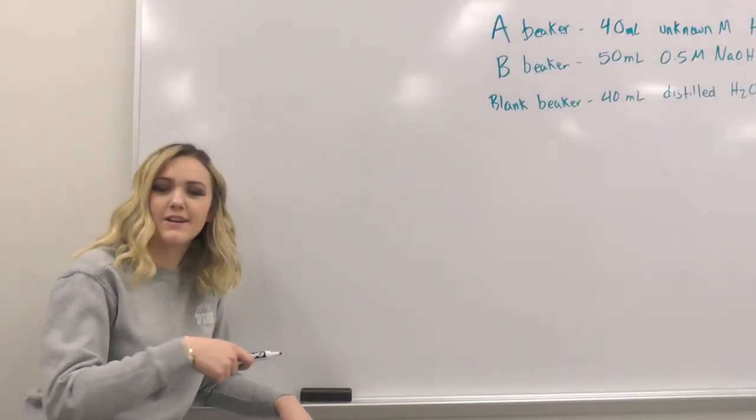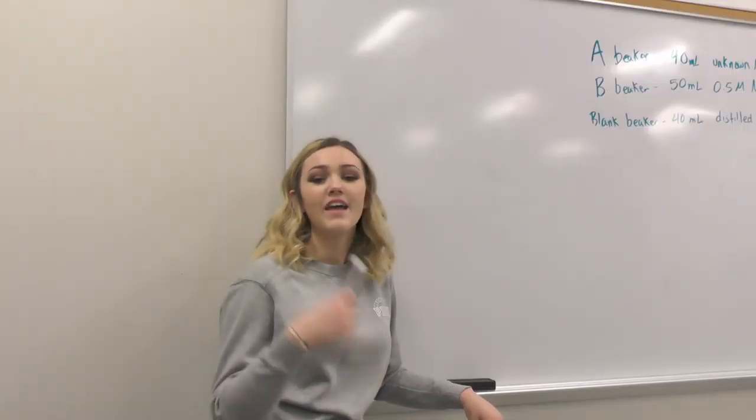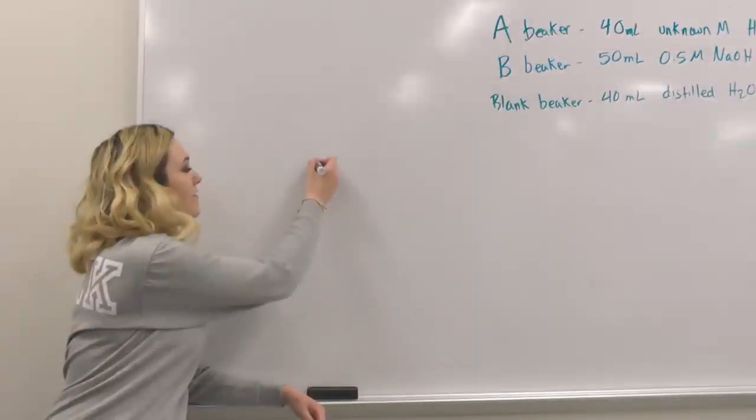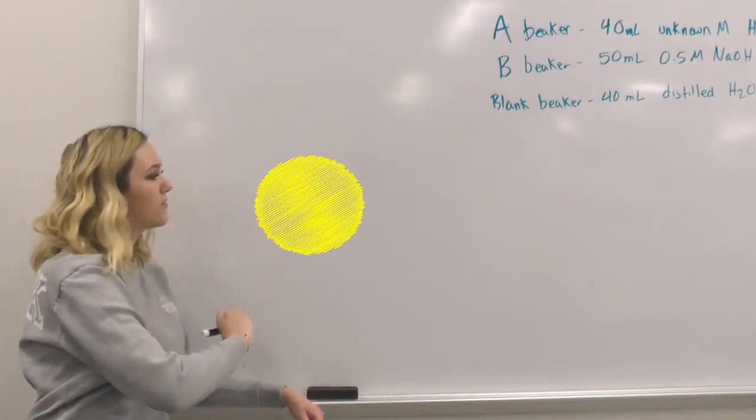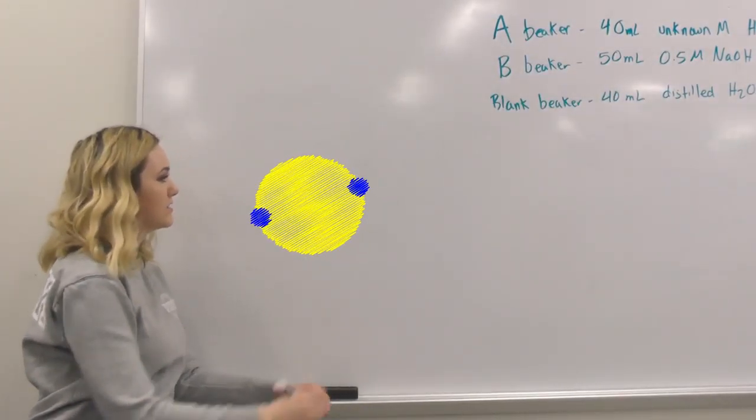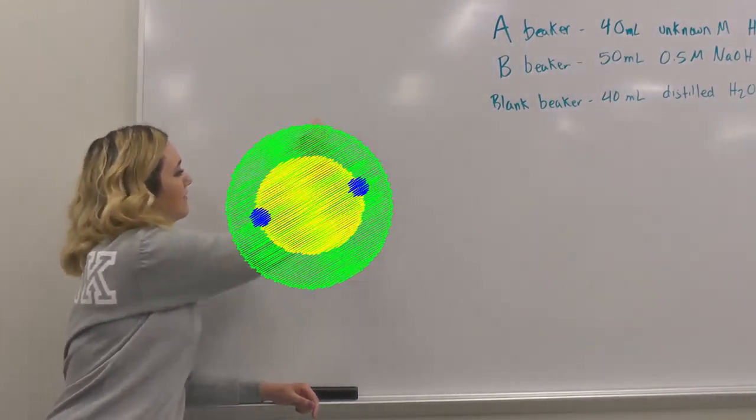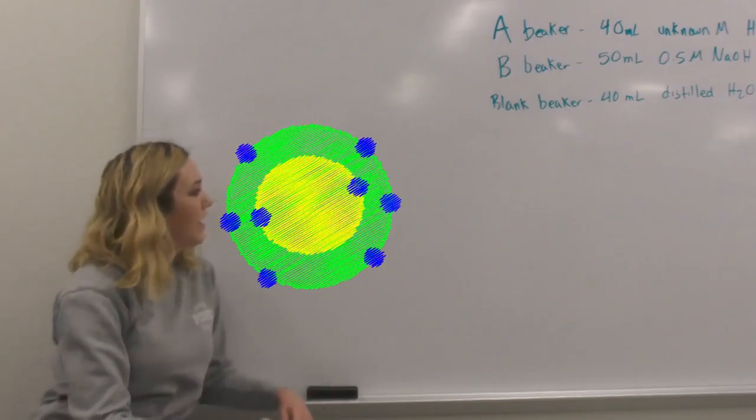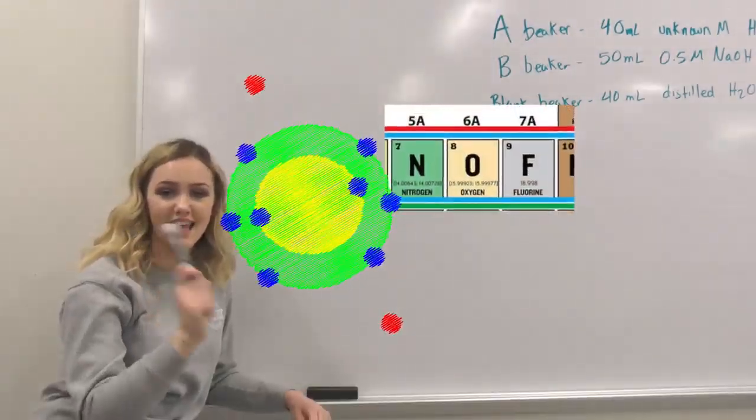Next order of business, we're going to be talking about the octet rule. Every element wants to gain a valence electron. I'll be using oxygen as an example. In the first energy level, there is going to be two electrons, and then in the second energy level, there are going to be six because oxygen is in group 6a.